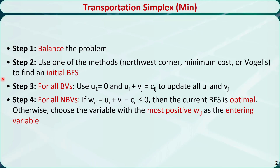Step 3, introduce an auxiliary variable u for each supply point and introduce an auxiliary variable v for each demand point. For all basic variables in the basic feasible solution, use u1 = 0 and ui + vj = cij to update all the u's and v's, where cij is the cost coefficient for the i-th row and j-th column.